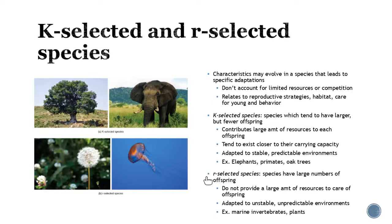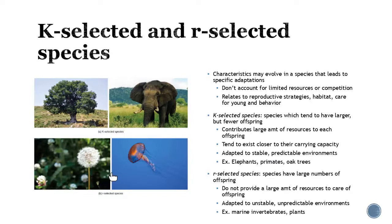The opposite is what we call R-selected species, where they produce a large number of offspring. Marine invertebrates and plants fall into this category — plants produce a large number of seeds and getting those started early does not take a large amount of resources. Not all of them are going to survive; these species probably have a high early mortality rate and less of a chance of making it to adulthood. But the key thing about R-selected species is that they can adapt easily to unstable and unpredictable environments.